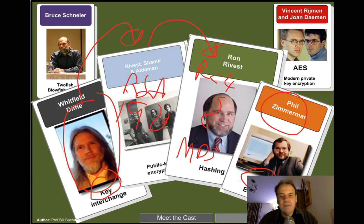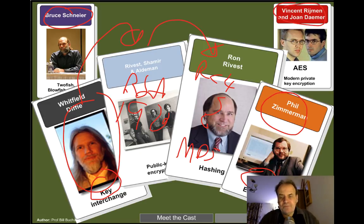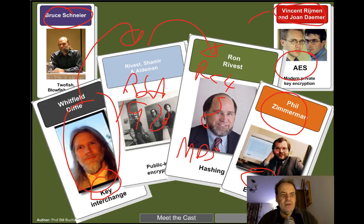Bruce Schneier is someone whose books you should really read — he talks about cryptography in an enlightened way and shows how it can build new trustworthy worlds. Phil Zimmermann created PGP encryption — a secure email system — and nearly ended up in prison because of it. Two researchers created Rijndael, which won a NIST competition to create a new cryptography method, and it is now called AES encryption.